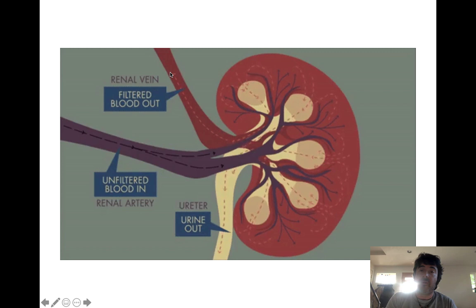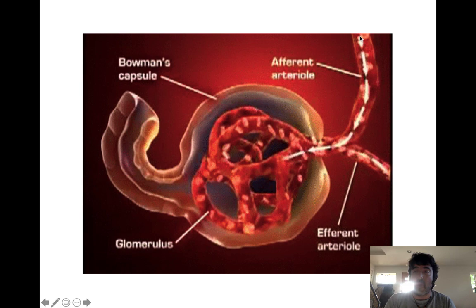When somebody does dialysis, they're put on a machine that artificially filters blood plasma — it takes hours and is done only once or twice. It's nowhere near as good as what the kidneys are doing all day every day. Anything our body wants to get rid of we eliminate in the form of urine, and what comes out is filtered blood that has a lower concentration of metabolic waste and toxins.